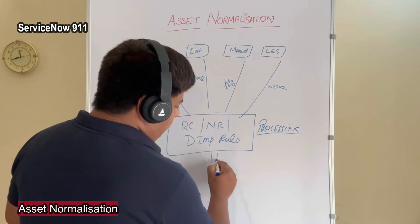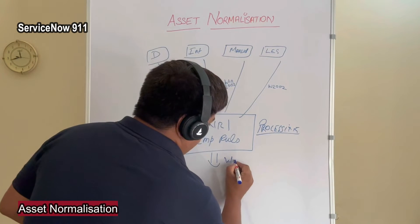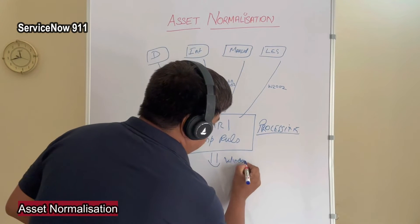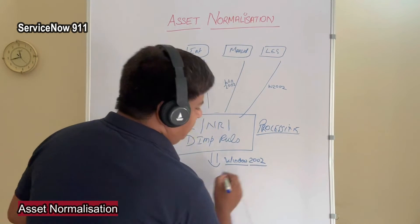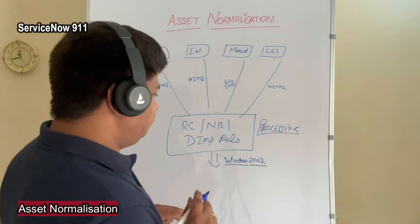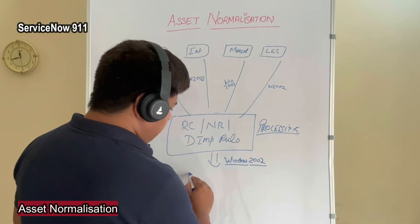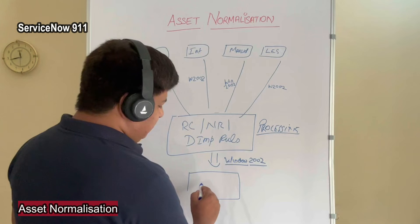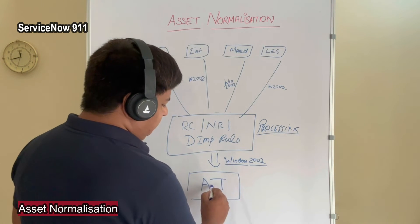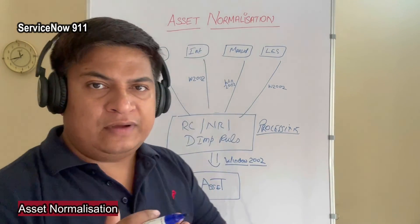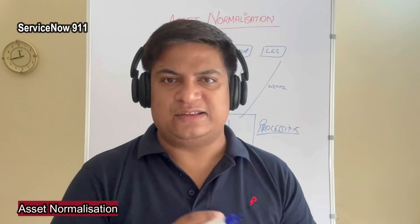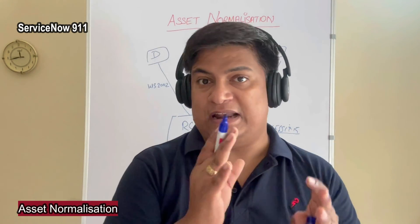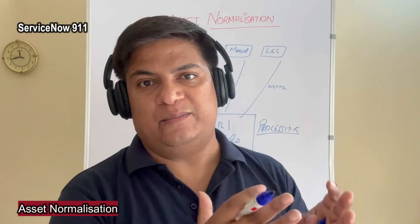After that processing, we determine that the new standard is 'Windows 2002' — meaning the name of the operating system and then its version. This is the new standard as per the company, and then we add this data into our asset table. This process of increasing data integrity and data correctness is known as normalization — we normalize the data every time it comes from different systems.